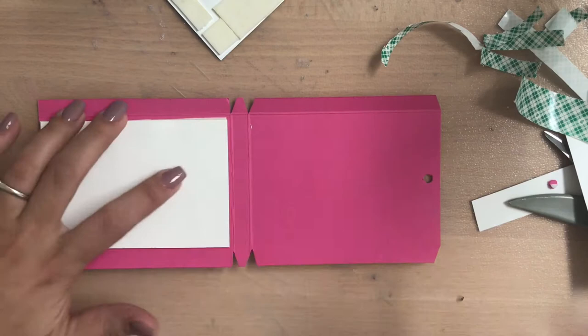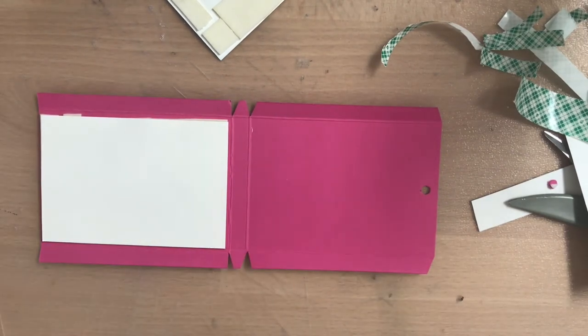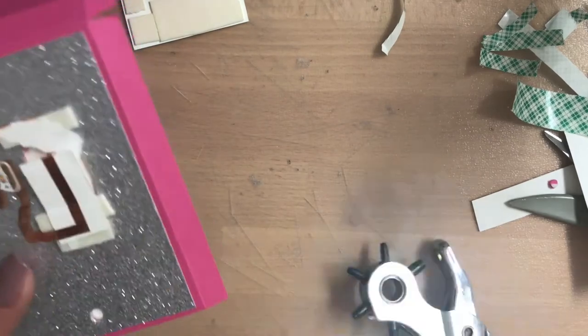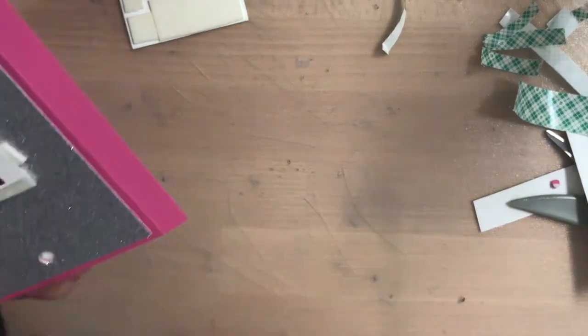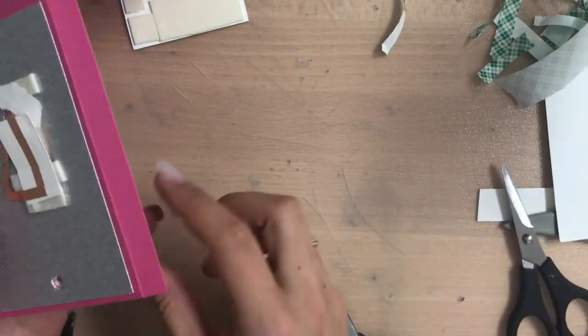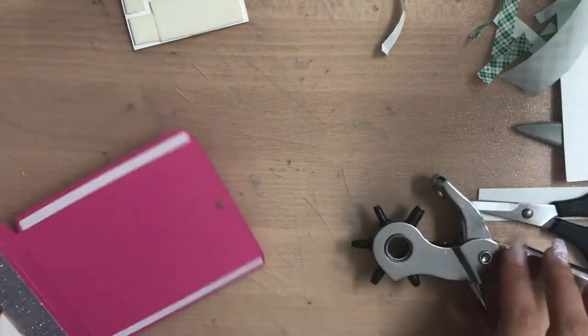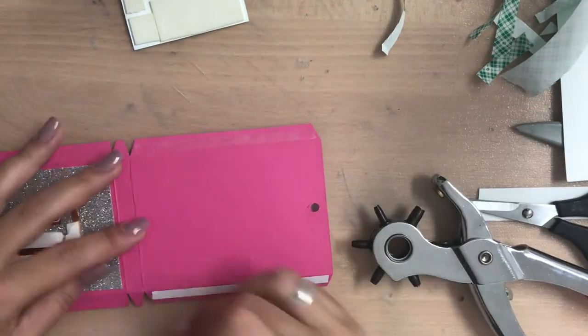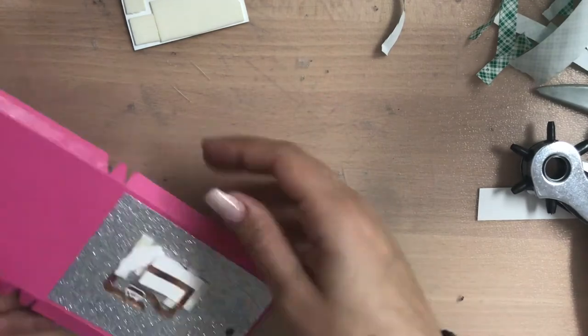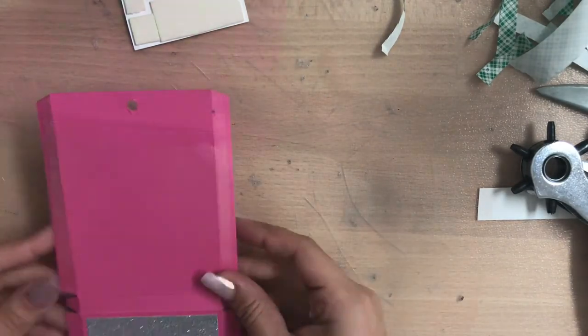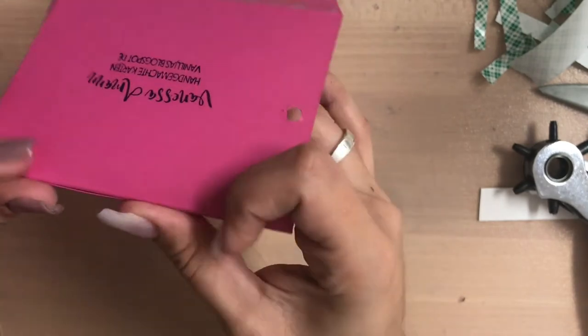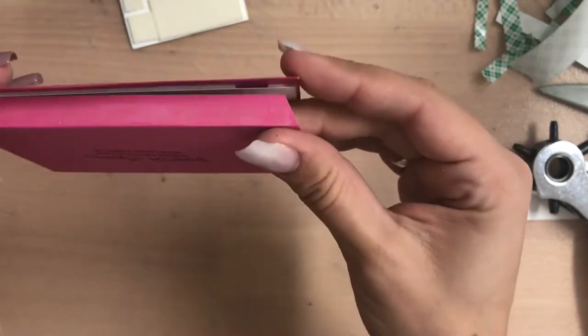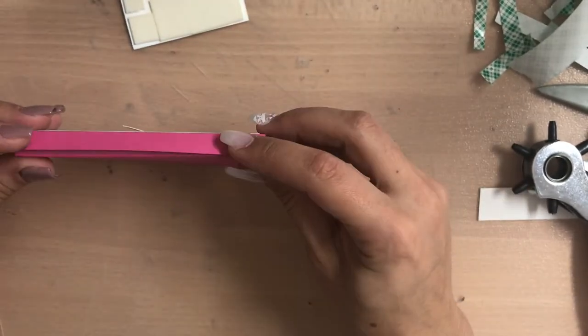In the inside I adhered a white card panel just because I found it a little bit prettier. Through this card panel I also punched some holes and now I'm starting to create the box.